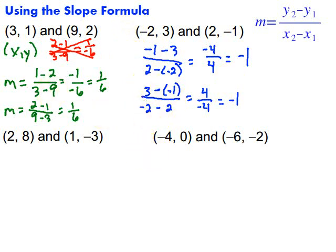Let's try this next one. In this one, again, doesn't matter which y you take first. Let's take this one. We'll go negative 3 minus 8 over 1 minus 2. Again, just being consistent, ordered pairs matched up vertically. So negative 3 minus 8 would be negative 11 over 1 minus 2, which would be negative 1. So that would simplify to just 11.